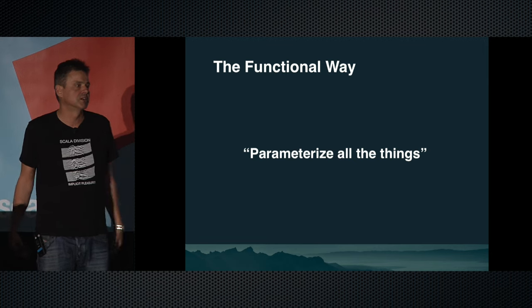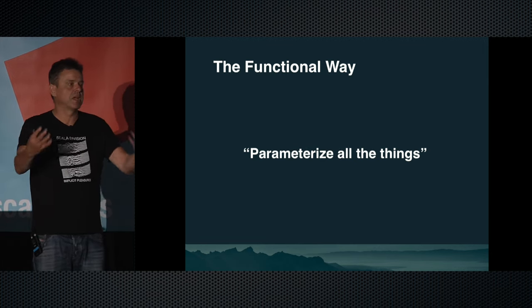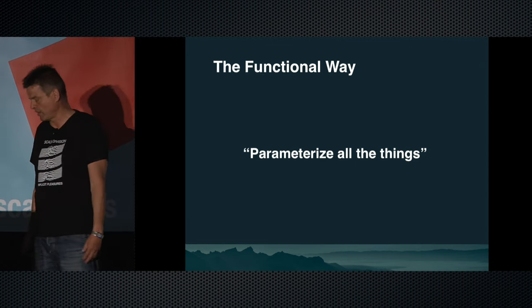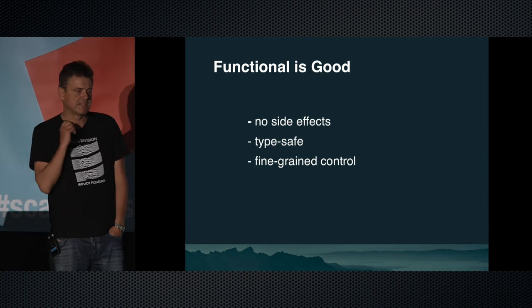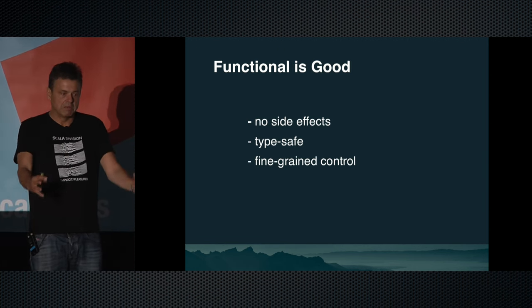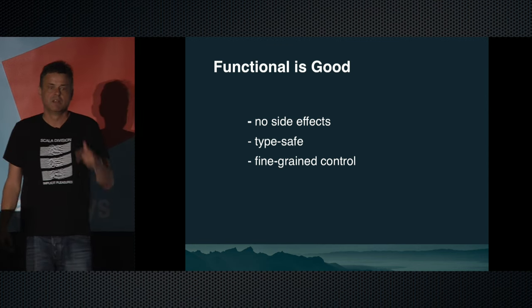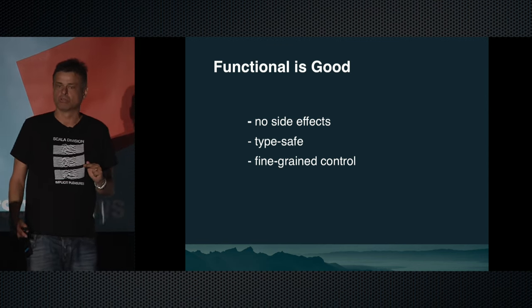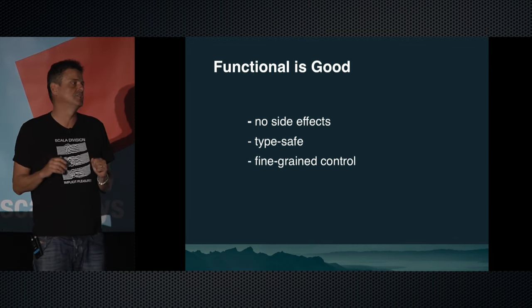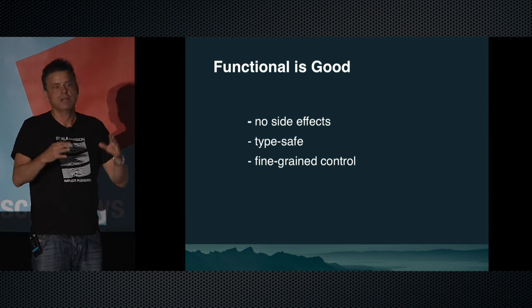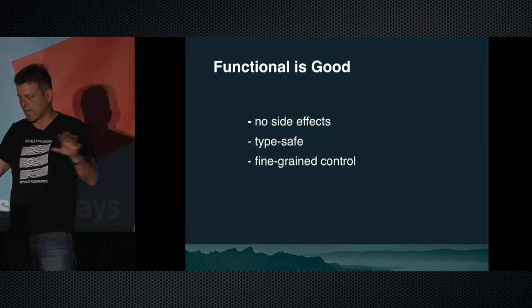Scala is a functional language, and functional programming has a very simple recipe: parameterize all the things. Just use parameters. If you need to get something from the context, make that into a parameter and pass it into your function. Very simple. The good parts of functional programming are no side effects, type safety, and very fine-grained control — you can pass the same parameter or a changed version down the call chain.